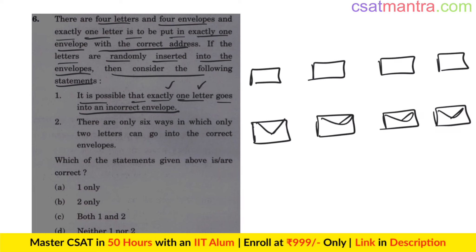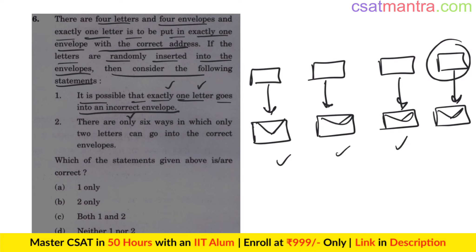Exactly one letter goes into an incorrect envelope — that means three letters went into correct envelopes. But then how can the fourth letter go into an incorrect envelope? It has no choice; it has to go into the correct envelope as well. So this statement is incorrect.